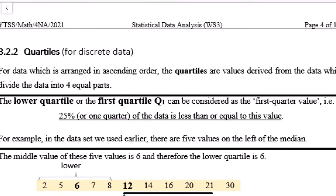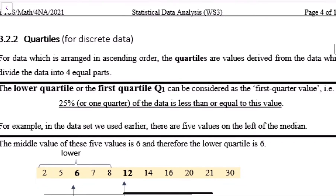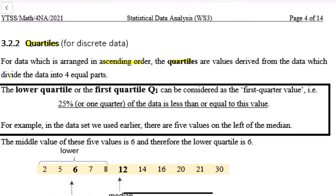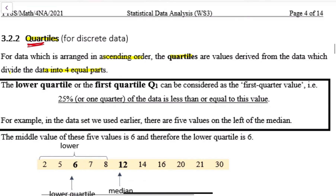Next we are going to look at quartiles for discrete data. For data already arranged in ascending order, quartiles are values derived from the data being divided into four equal parts. As you can see from the word 'quartile' — it's like 'quarter' — it's actually dividing into four parts. The lower quartile, or the first quartile Q1, highlight together with me.